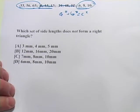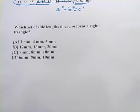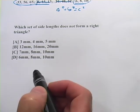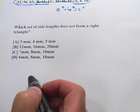Let's look at one more problem. This one says, which set of side lengths does not form a right triangle? So one of these is not a right triangle. Let's see if we can figure it out.